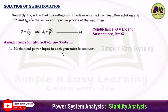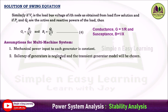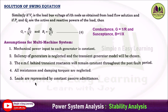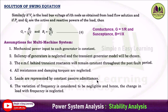Now we will see some assumptions for the multi-machine system. First, mechanical power input to each generator is assumed to be constant. Second, saliency of the generator is neglected and the transient generator model is chosen. Third, the EMF behind the transient reactance remains constant throughout the post-fault period. Fourth, all resistances and damping torques are neglected. Fifth, loads are represented by constant passive admittances. Sixth, the variation of frequency is considered negligible and hence the change in load with frequency is neglected.